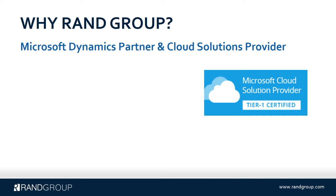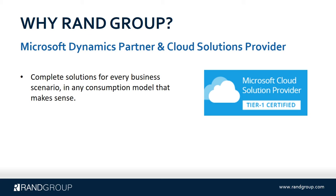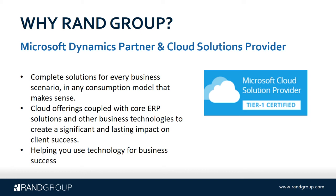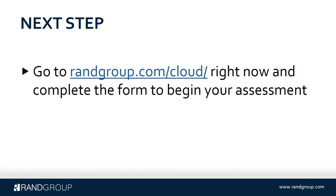So why use Rangroup? The first reason is we provide complete solutions for the business scenario. In any consumption model that makes sense, the cloud offering is coupled with core ERP solutions and other business technologies to create a significant and lasting impact on client success. There are many cloud solution providers that are tier-one certified, as Rangroup is, but very few are both tier-one certified cloud solution providers and Dynamics ERP partners with Microsoft. That allows Rangroup to use technology for business success — our mission statement — because we have access to both the business productivity side and the cloud side, providing a truly turnkey solution. Rangroup has the capability and the resources on staff to deliver that.